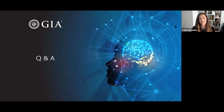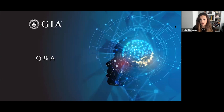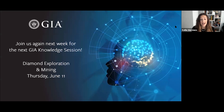A few people asked about the seven value factors — that might be something for a separate session. For now, especially if you're a retailer, we have a pearl brochure explaining the seven value factors at our store at store.gia.edu, with retailer support materials to help you explain them at the counter. That brings us to the end of today's session. Thank you everyone for joining us. We'll be back next week with Evan Smith, who'll tell us all about diamond exploration and mining. Thanks again to Chunhui. If you have any questions for GIA, please follow us on Instagram, Facebook, LinkedIn, and Twitter.